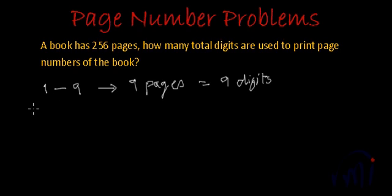Now what will be the next page number? Next page number will be 10, which is a two digit number, and what is the biggest two digit number? 99. So now let's count how many two digit page numbers are there.